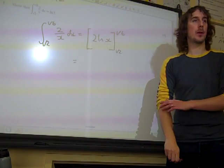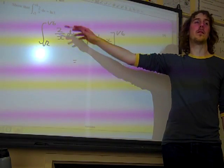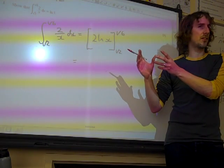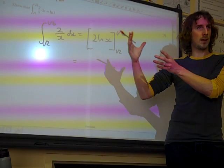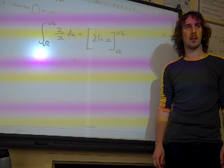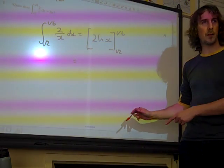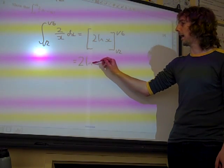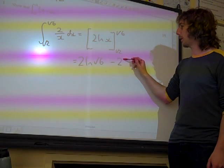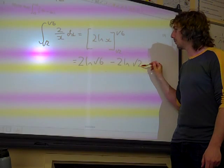Now we are going to be really careful because it does want it in the form, it wants it as ln 3. So we're not going to calculate this and just come up with some decimal answer. We're going to sub these values in really carefully. 2 ln root 6, take away 2 ln root 2.